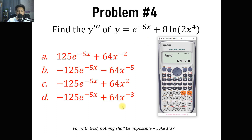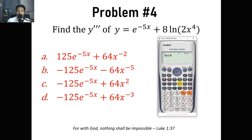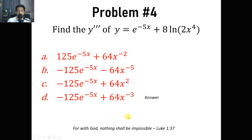Let's try letter D first: negative 125 alpha E raised to negative 5x. We solve it using 0.1, then divide the answer by the stored value D for the approximate third derivative. We get 1.00239461, which is approximately equal to 1. So we need not go through any other choices — the answer for this problem is letter D.